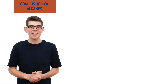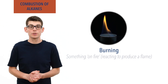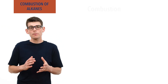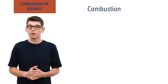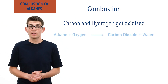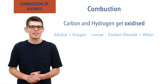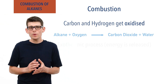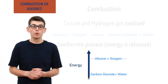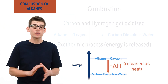Burning usually means something is on fire, reacting with a flame produced, whereas combustion refers to the actual chemical reaction that is taking place. When combustion occurs, the carbon and hydrogen in the alkane get oxidized and gain bonds to oxygen atoms — usually carbon dioxide and water are produced. The process is always exothermic as these products of oxidation are lower in energy and more stable than the original alkane and oxygen reactants. This difference in energy goes into the surroundings as heat.